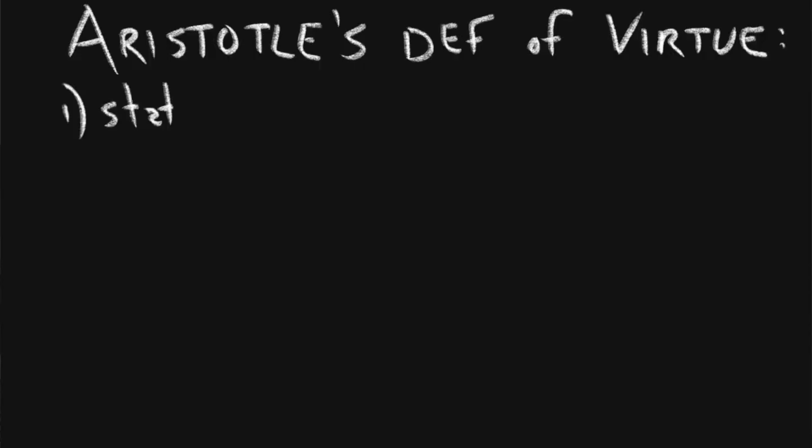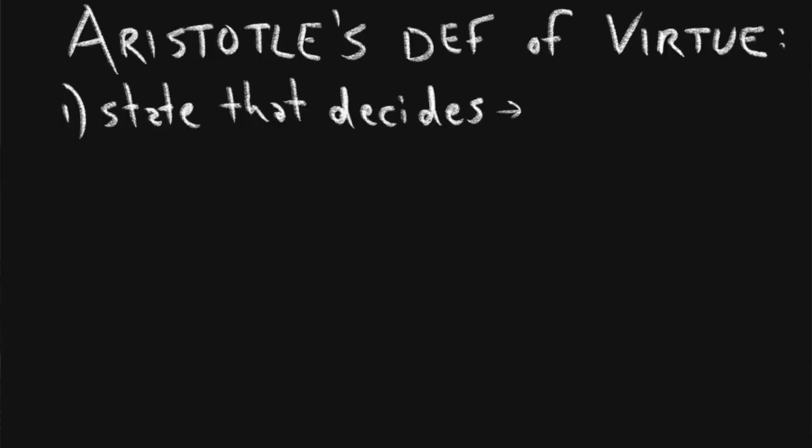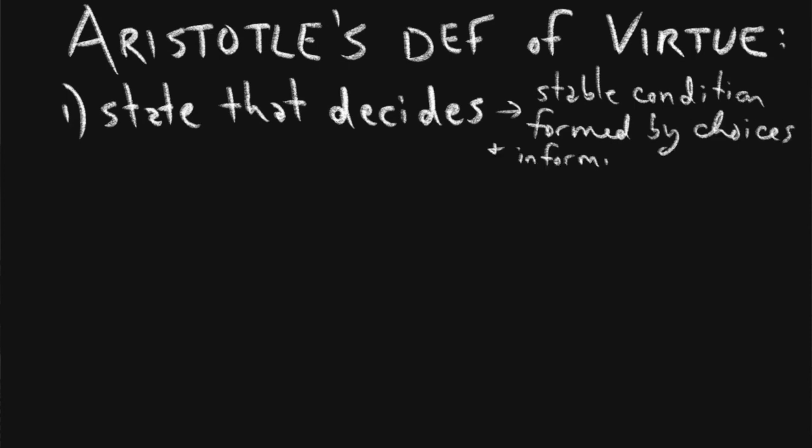The first component of virtue is that it is a state that decides. This goes back to the final requirement in Section 4 for being virtuous rather than simply performing virtuous actions. The agent must know what the virtuous action is, must decide to do it for its own sake, and must act from a firm and unchanging state — a stable condition developed through the choices we make in a variety of situations.